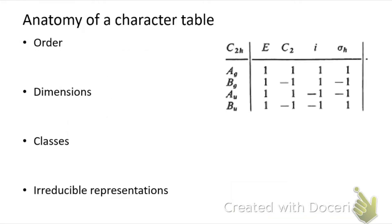An important feature of our character table is what's called the order of the point group. The order equals the total number of symmetry operations in a point group. In this case, because each of the coefficients on these symmetry operations is one, we have a total of one, two, three, four operations in this point group, so the order here is going to be four.